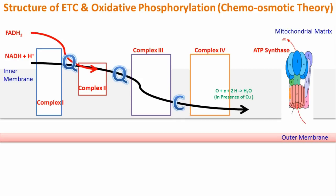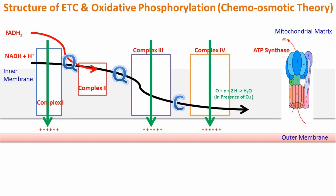At complex 4, oxygen with two hydrogen ions and electrons forms water, and this happens in the presence of copper present in complex 4. When hydrogen moves through these complexes, hydrogen ions are pumped from the mitochondrial matrix to the intermembrane space. This pumping happens at complex 1, complex 3, and complex 4 — but not at complex 2. Since FADH2 bypasses complex 1, the amount of energy produced by FADH2 is less than that of NADH plus H.